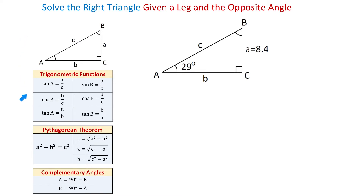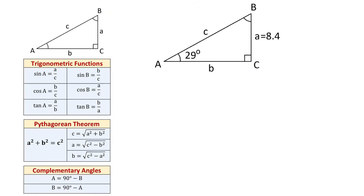To the left we have all the formulas we need to solve a right triangle. In the previous videos we went over these formulas and we will review them here one more time. All these formulas refer to this right triangle with sides A, B, and C and angles A, B, and C. Angle A is opposite of side A, angle B is opposite of side B, and the hypotenuse C is opposite of the right angle C.